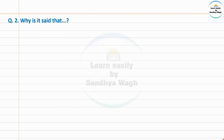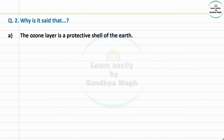Next question: Why is it said that the ozone layer is a protective shell of the earth? The ozone layer is considered a protective shell of the earth. Protective shell means a protective covering.